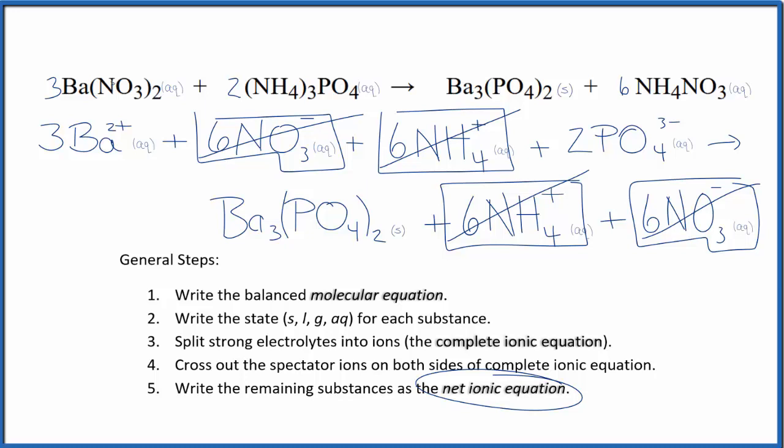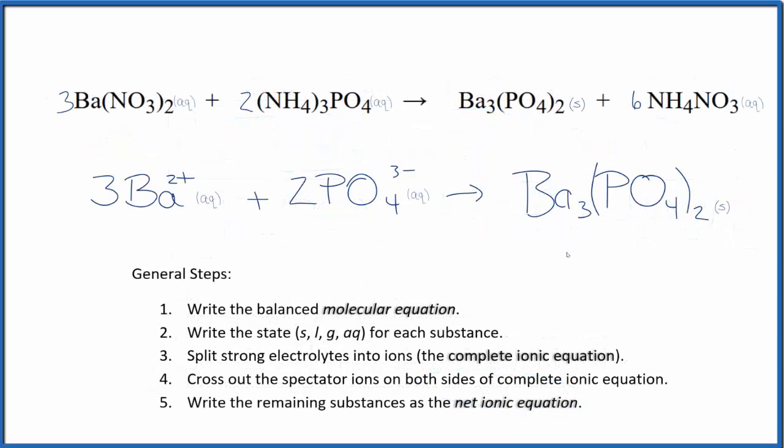What's left is the net ionic equation for barium nitrate plus ammonium phosphate. Let's remove these spectator ions. And this is the balanced net ionic equation for Ba(NO3)2 plus (NH4)3PO4.